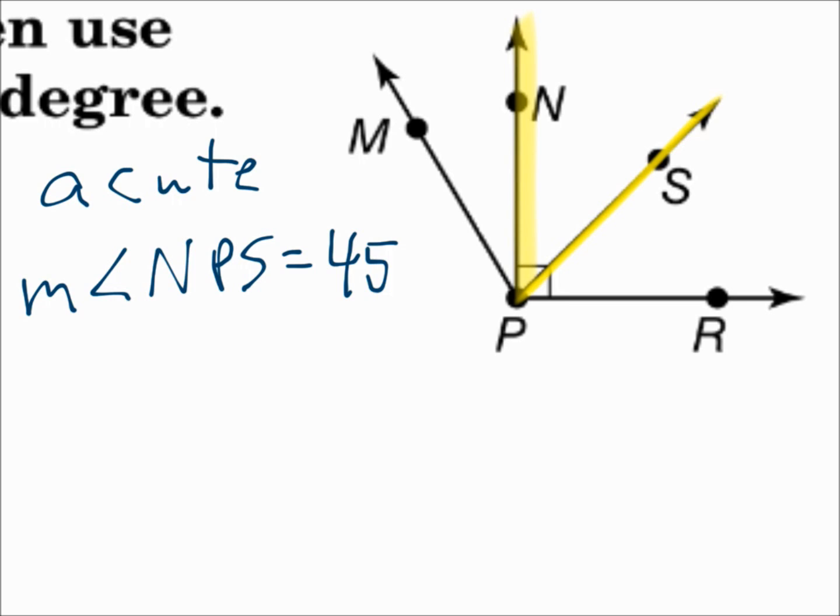So remember, less than 90 is acute, it's a cute little angle. Greater than 90 is obtuse, it's an obnoxious angle.